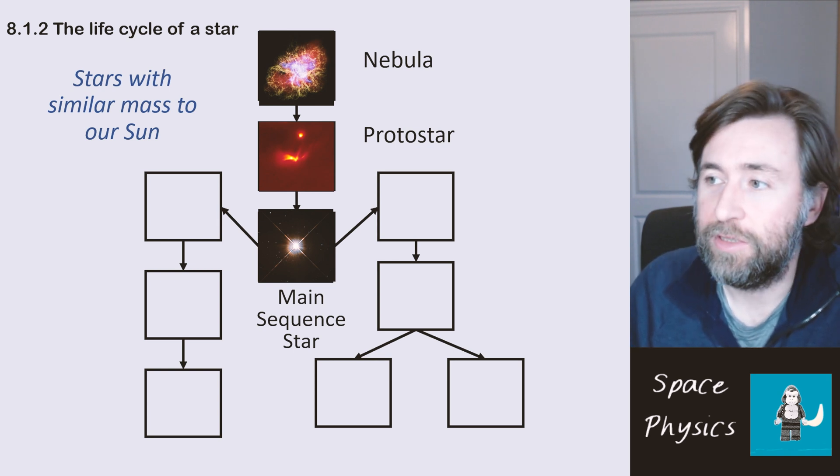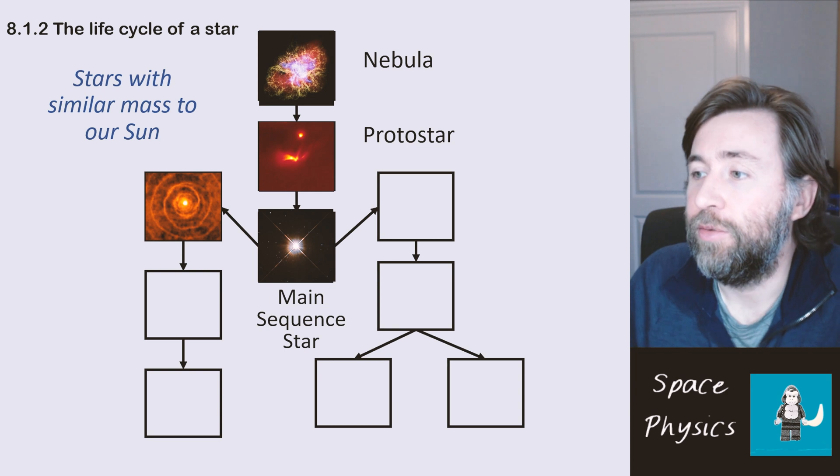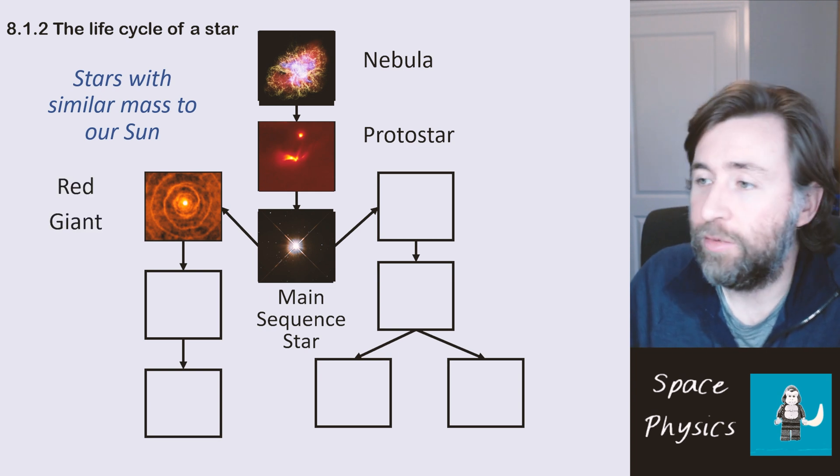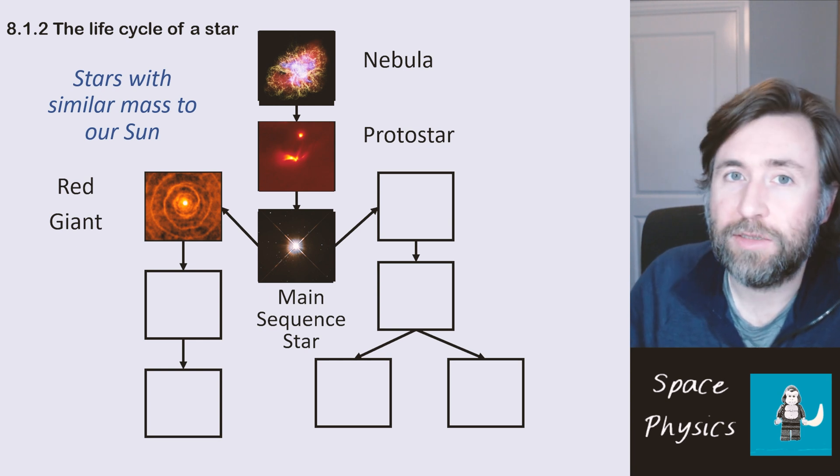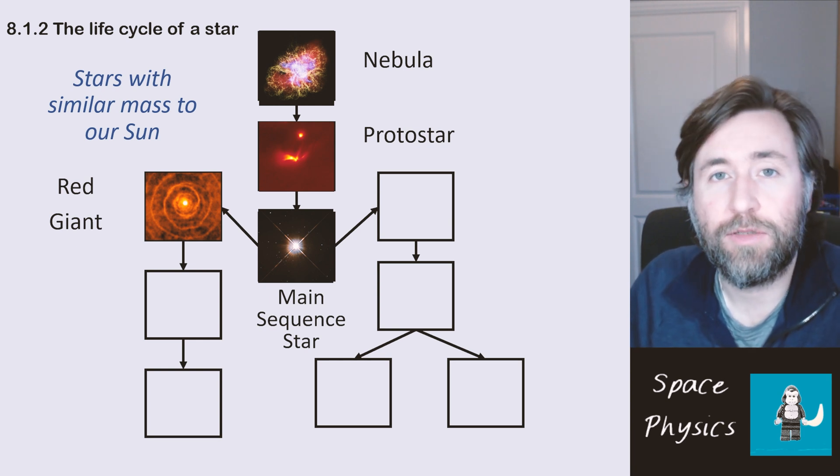At the end of the main sequence of a star with similar mass to our Sun, you're going to have it expand and cool down to be a red giant. So it changes colour because temperature and colour are linked. Redder stars are cooler and bluer stars are hotter.